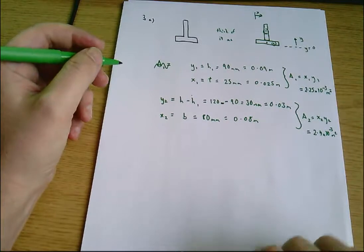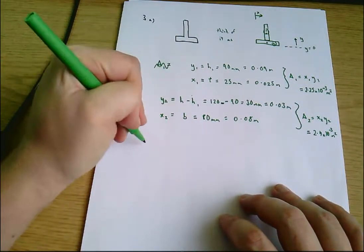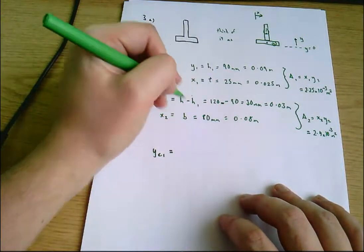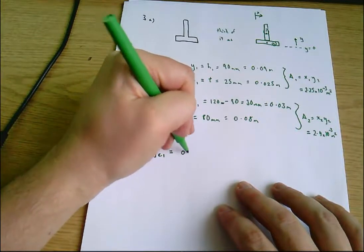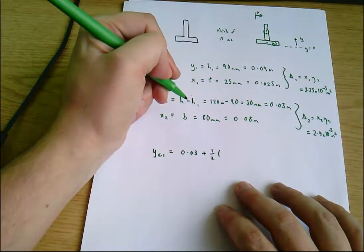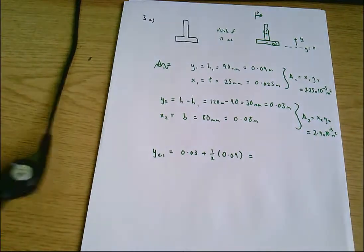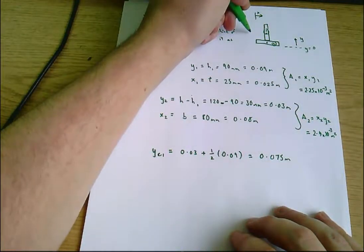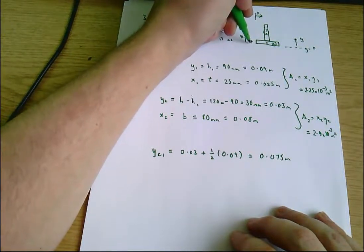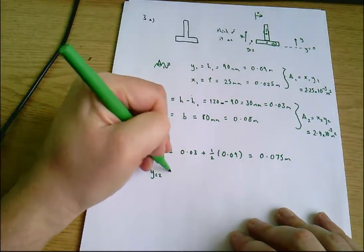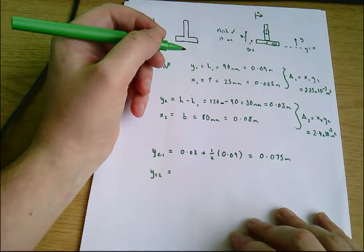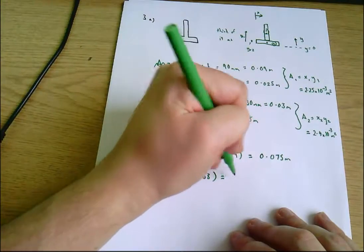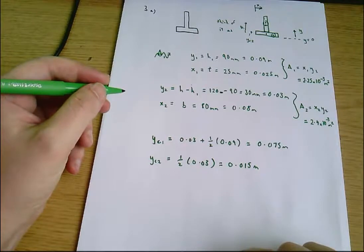Next I want the height of the centers of the two rectangles. yc1 is the center height of rectangle 1: that's the height of rectangle 2, which is 0.03, plus half the height of rectangle 1, which is 0.09 divided by 2 — giving 0.075 meters. yc2 is just half the height of rectangle 2, so that's 0.015 meters. That's all the geometry we need.